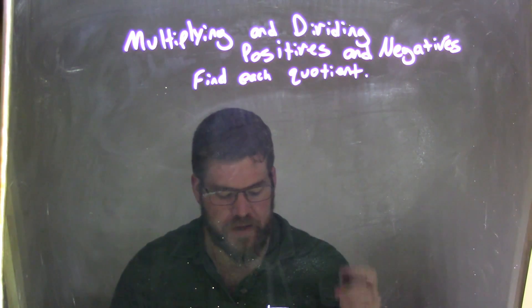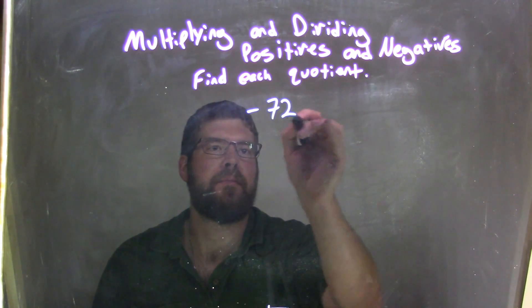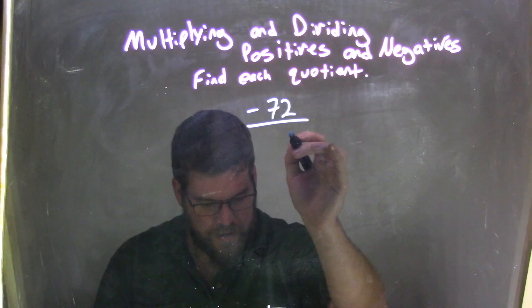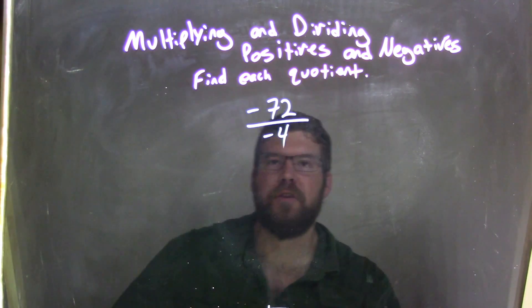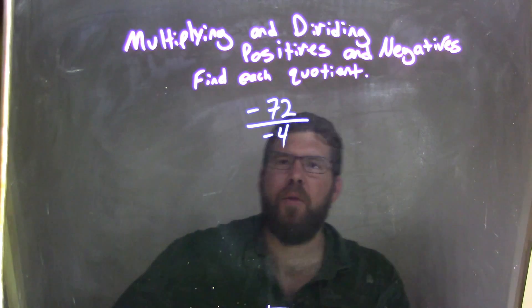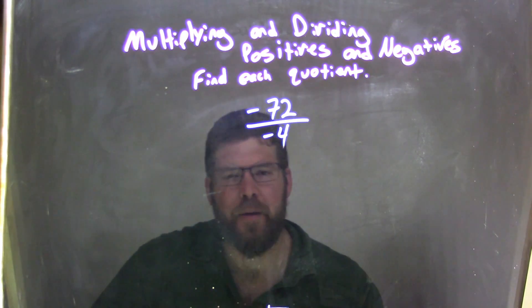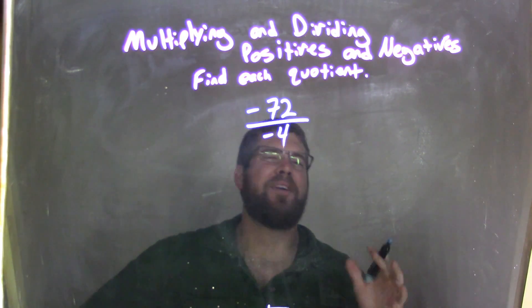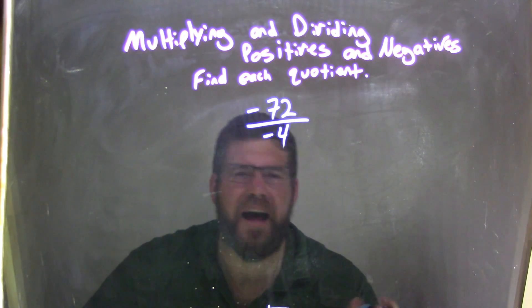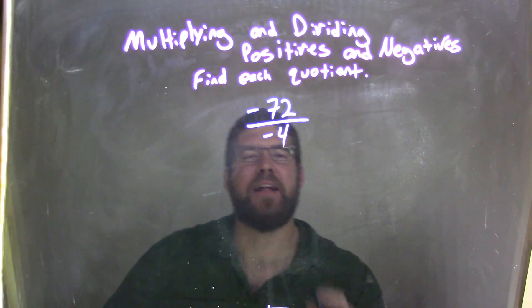So if I was given this quotient, negative 72 divided by negative 4, the way I like to break this down, because sometimes off the top of my head, it's going to be 18, but 72 is kind of hard to think about. How do I get 4 going into 72? I'm going to show you some methods for that.